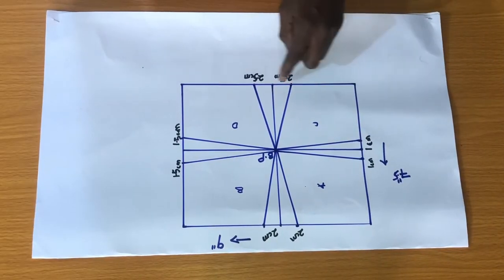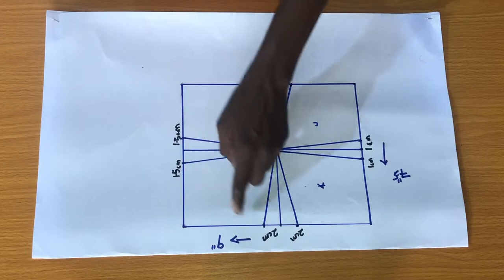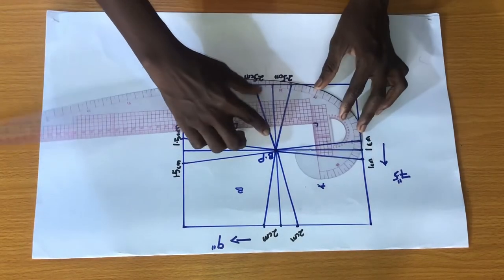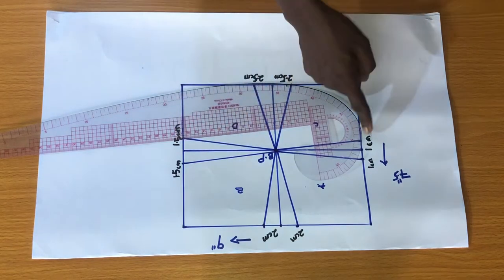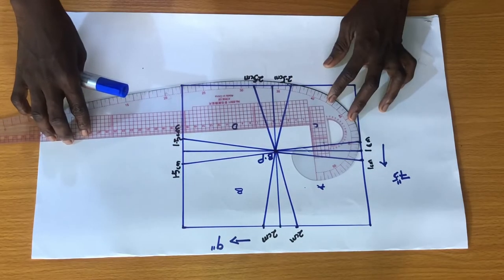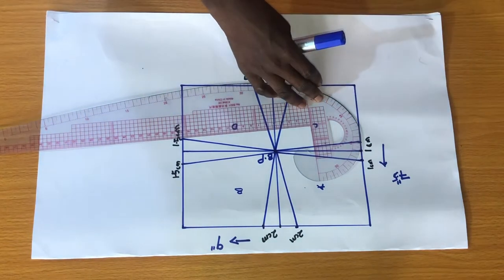The next step is to connect the points together. Since a bra cup has curved edges, we need to implement a curved ruler to achieve the curved edges.